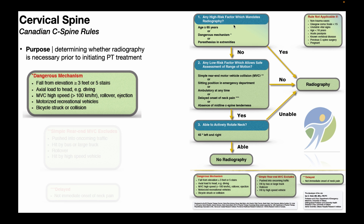If none of the high-risk factors apply, you move on to the second question: Are there any low risk factors which allow safe assessment of range of motion? These criteria are actually good things — satisfying them makes it less likely that radiography is needed. They include: a simple rear-end motor vehicle collision, the person being able to sit up in the emergency department, being ambulatory at the time, having a delayed onset of neck pain, and having an absence of midline cervical spine tenderness.